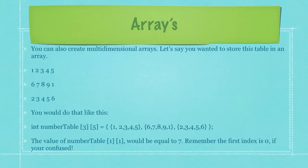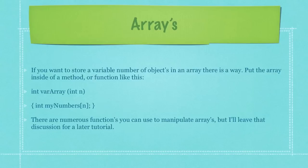You can also create multidimensional arrays. Let's say you wanted to store the table you can see here, which is just one, two, three, four, five, six, seven, eight, nine, one, and so forth and so on. You would do that like you can see here in the sixth bulleted item. Here I'm creating a multidimensional array that's going to contain integers and I'm naming it number table, and you can see through the use of these brackets and commas I'm going to assign these numbers to said array. If I would then call for the value of said multidimensional array named number table, it would return a value of seven. And remember, the first index is zero like I explained in the previous example. And if you want to store a variable number of objects in an array, you can most definitely do that. Put the array inside of a method or function such as I show you here in this example.